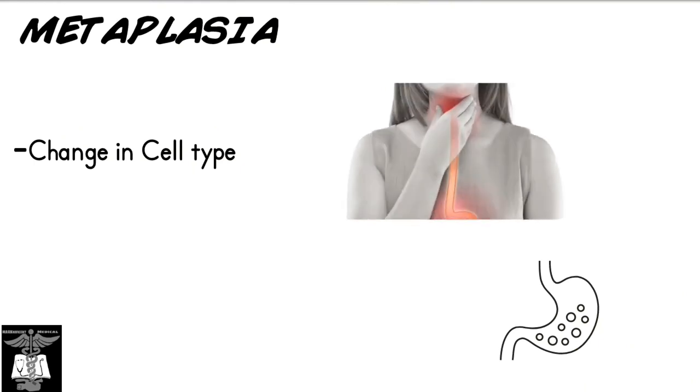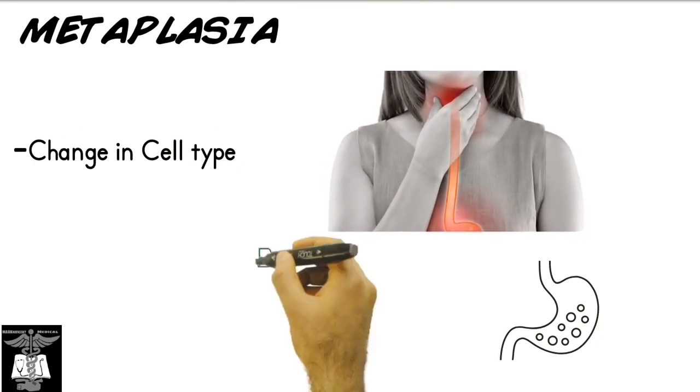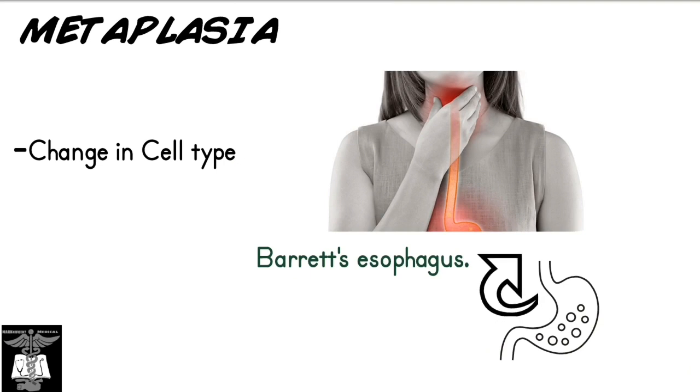An example would be Barrett's esophagus. In this case, GERD leads to stomach acid retrograding into the esophagus. As a result, stratified squamous esophageal cells are replaced by goblet cells, which are better able to handle the stomach acid because they can create mucus.